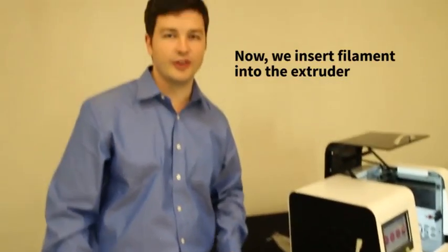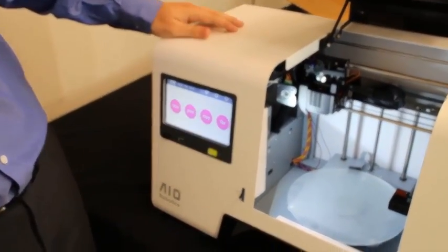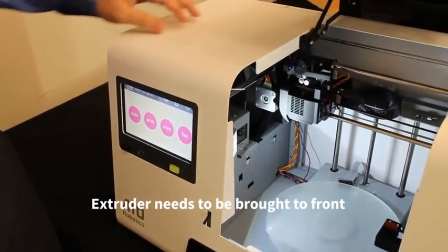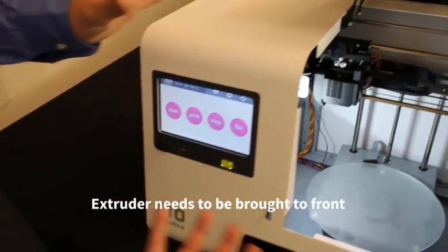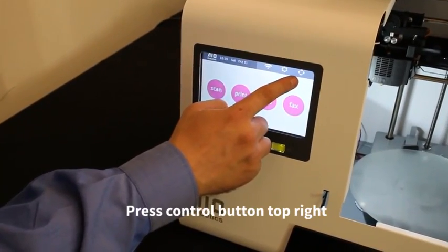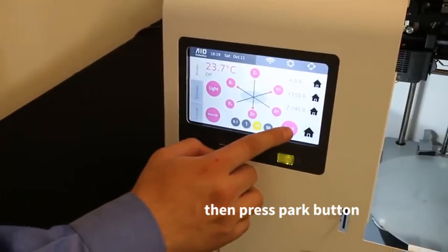And now let's insert the filament into the extruder. Here you can see the inside of the Zeus machine. The extruder is in the back of the machine and we have to bring it to the front. For that reason, you press the control button at the right top of your screen. And then you press the park button.